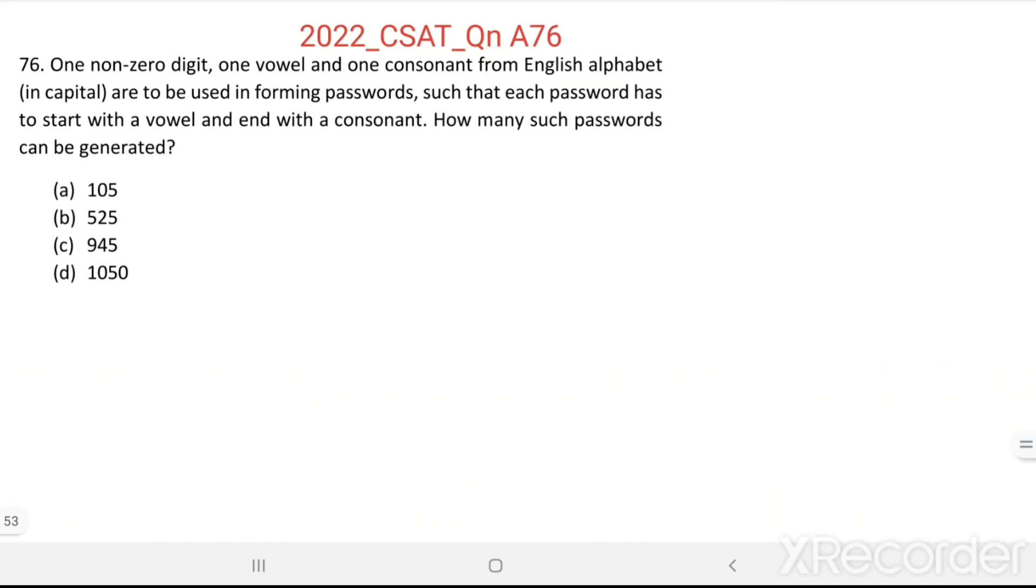Question number 76: One non-zero digit, one vowel, and one consonant from English alphabet in capital are to be used in forming passwords, such that each password has to start with a vowel and end with a consonant. How many such passwords can be generated?